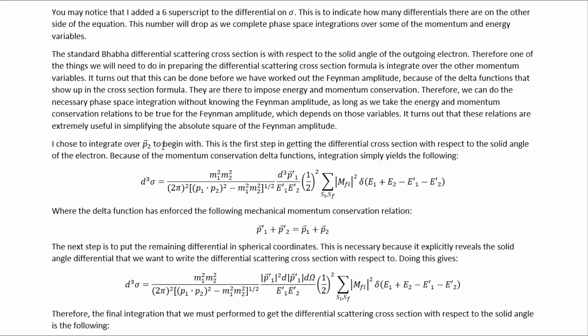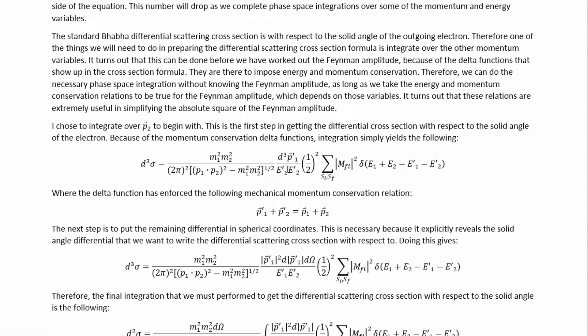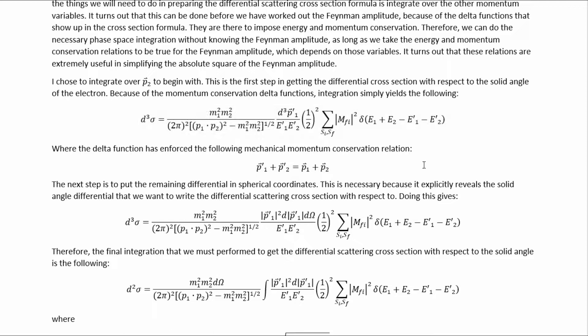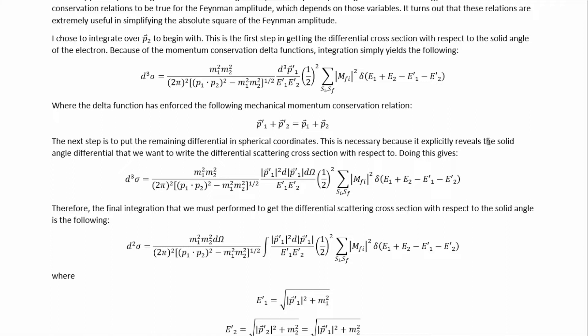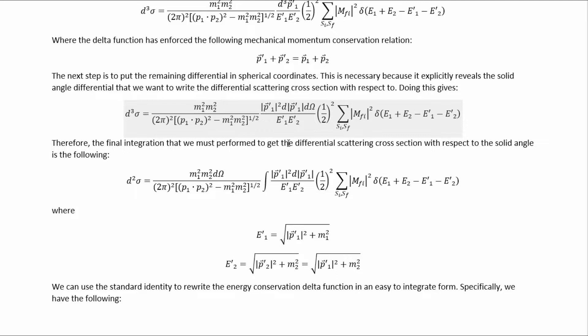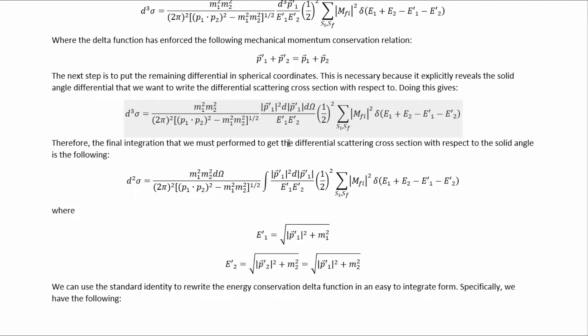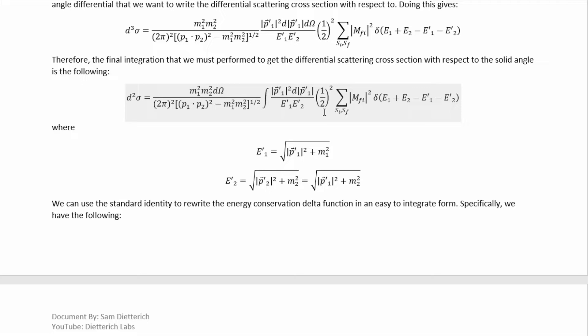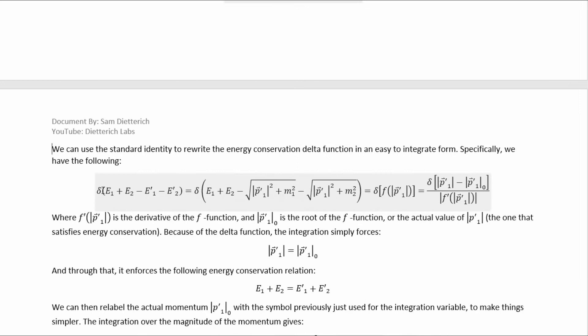I chose to integrate over P2 to begin with. This is the first step in getting a differential scattering cross-section with respect to the solid angle of the electron. Because of the momentum conservation delta function, integration simply yields the result where the delta function has enforced mechanical momentum conservation. The next step is to put the remaining differential in spherical coordinates, which explicitly reveals the solid angle differential that we want. This relation here comes from the fact that we're in the center of mass frame.